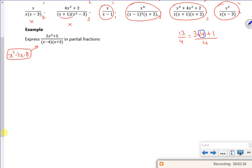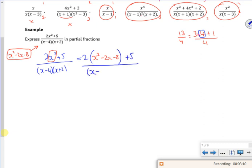So I'm just going to write this down. So I've got 2x squared plus 5, and I've got x minus 4, x plus 2, which I know is x squared minus 2x minus 8. This x squared, I'm going to change it into the bottom line. So I'm going to have 2 lots of x squared minus 2x minus 8 with a plus 5, all over my x squared minus 2x minus 8.